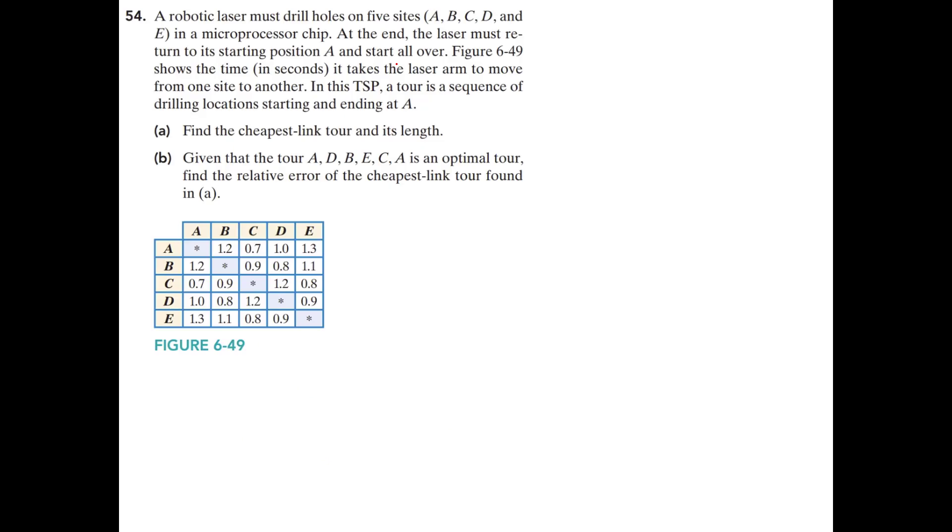Okay. Problem number 54. A robotic laser must drill holes on five sites, A, B, C, D, and E, in a microprocessor chip. At the end, the laser must return to its starting position, A, and start all over. Figure 649 shows the time in seconds it takes the laser arm to move from one site to another. In this traveling salesman problem, a tour is a sequence of drilling locations starting and ending at A. Find the cheapest link tour and its length.